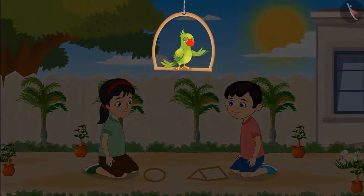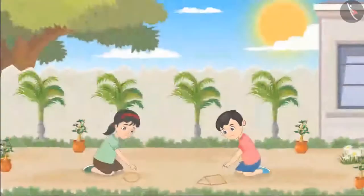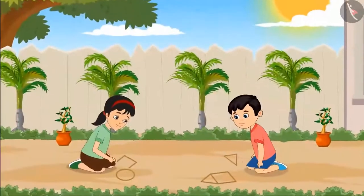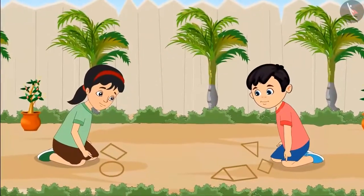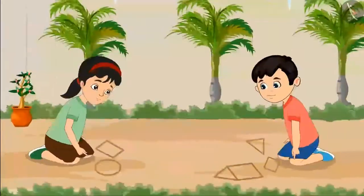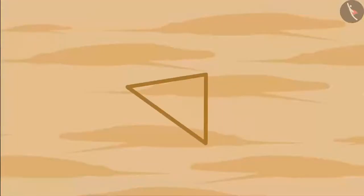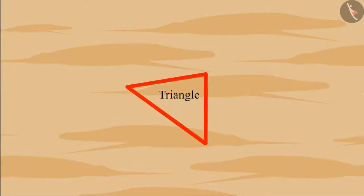So children, did you see how Chootu and Pinky are playing by making different shapes in the sand? After some time they started making different types of triangles, squares, rectangles, and circles. So children, do you know what shape this is? Yes, it is a triangle because it is a shape made of three sides.